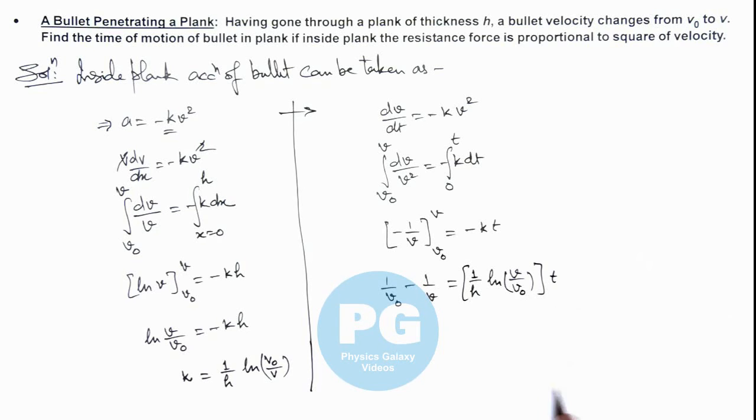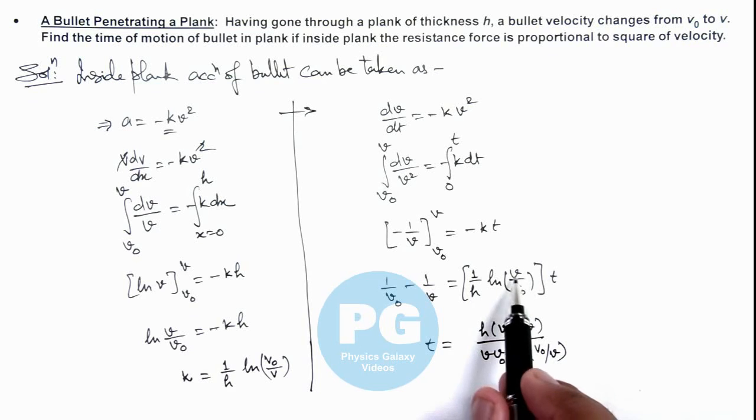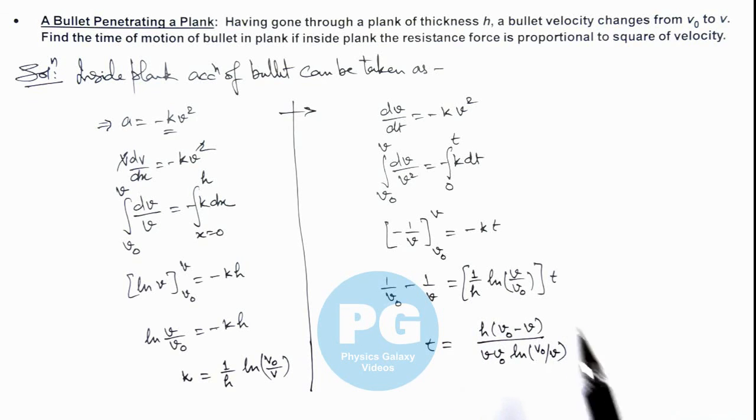So in this expression, we further solve it. The value of time we are getting as t = h(v₀ - v)/(v₀v·ln(v₀/v)). Here again we have reversed the ratio as it should be a positive value, and the value of v will certainly be less than v₀. So this will be the final result of this problem.